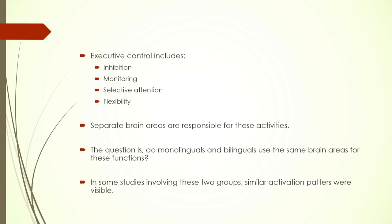Now we go on to control mechanisms. Executive control mechanisms basically include executive control — primarily a top-down process control mechanism that includes attention, selective attention, monitoring, inhibition, and primarily conflict monitoring and conflict resolution. If there are two important salient cues in the environment but I have been asked to do only one task, how well I can suppress the other cue is a reflection of my executive control.